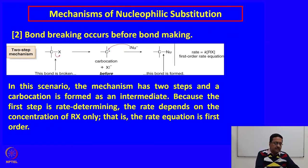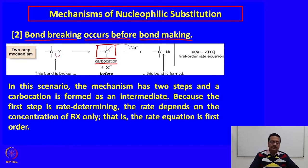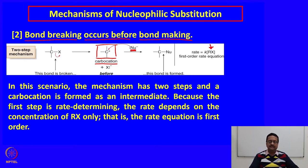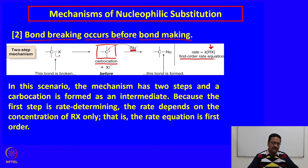The second scenario is that bond breaking occurs before bond formation. The carbon–halogen bond is broken first, forming a reactive species called a carbocation, and then that carbocation reacts with the nucleophile to form the new bond. In this case, the rate of reaction is determined only by the concentration of RX — the alkyl halide — making it a first-order reaction. The mechanism has two steps and a carbocation is formed as a reaction intermediate.